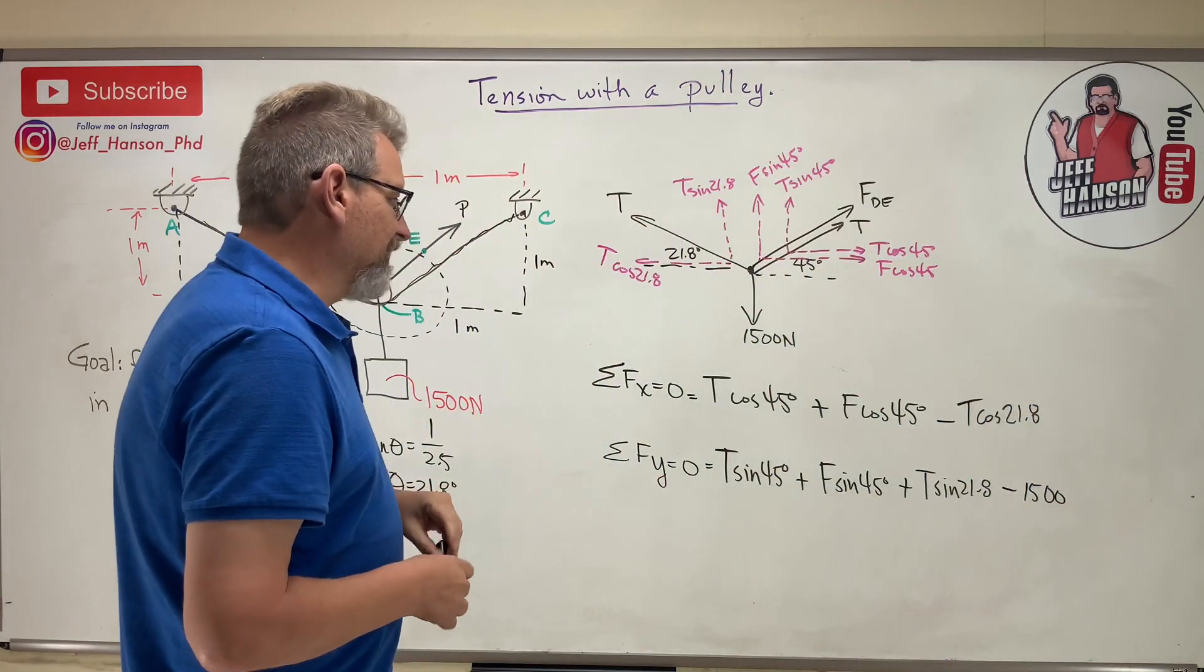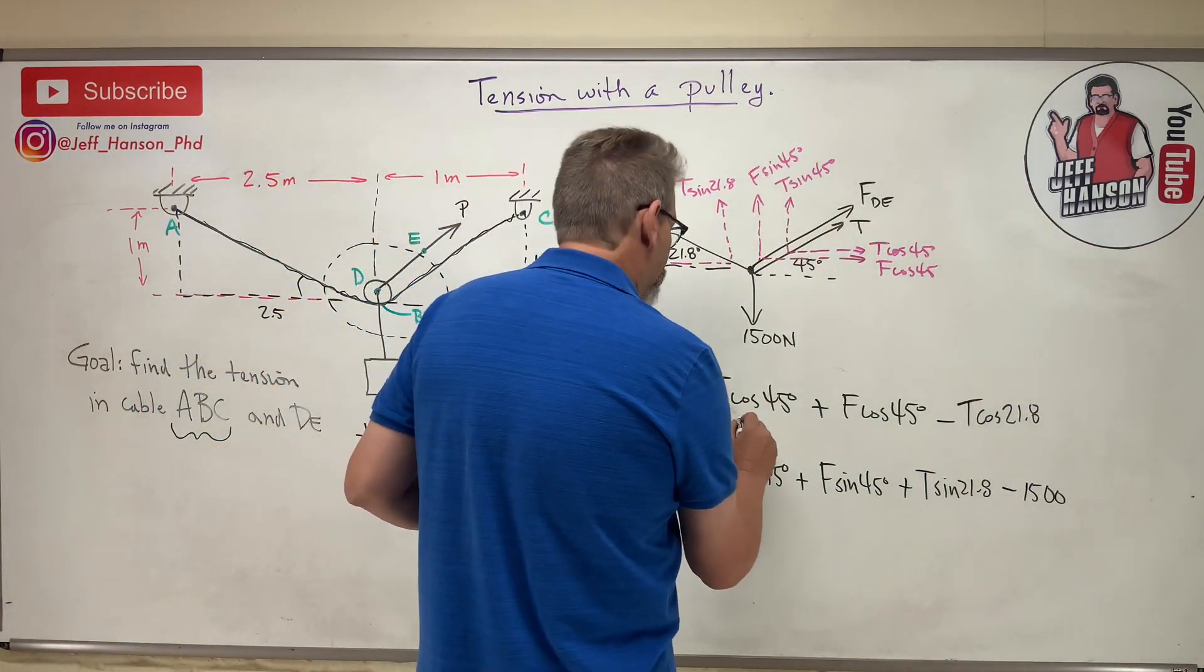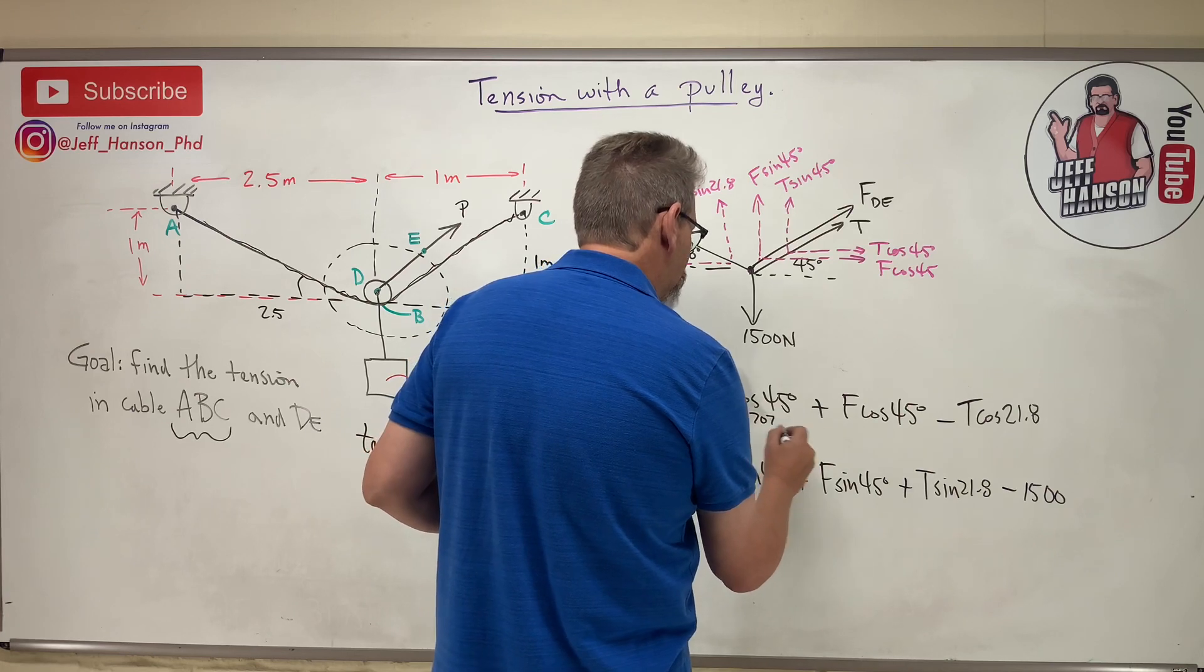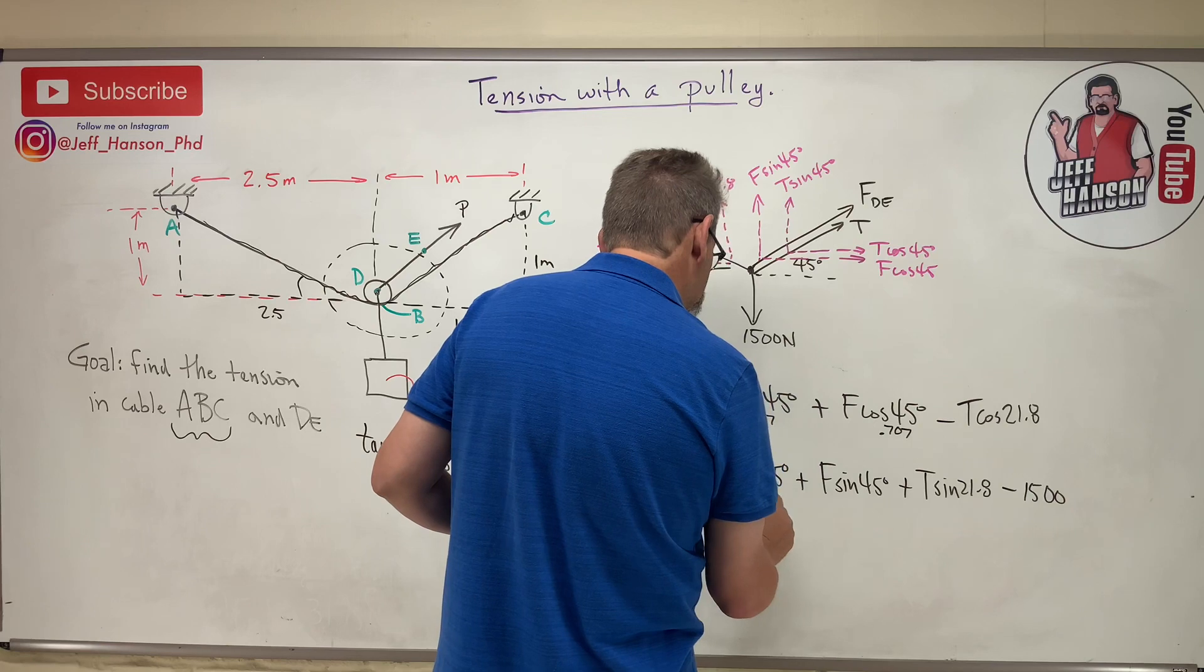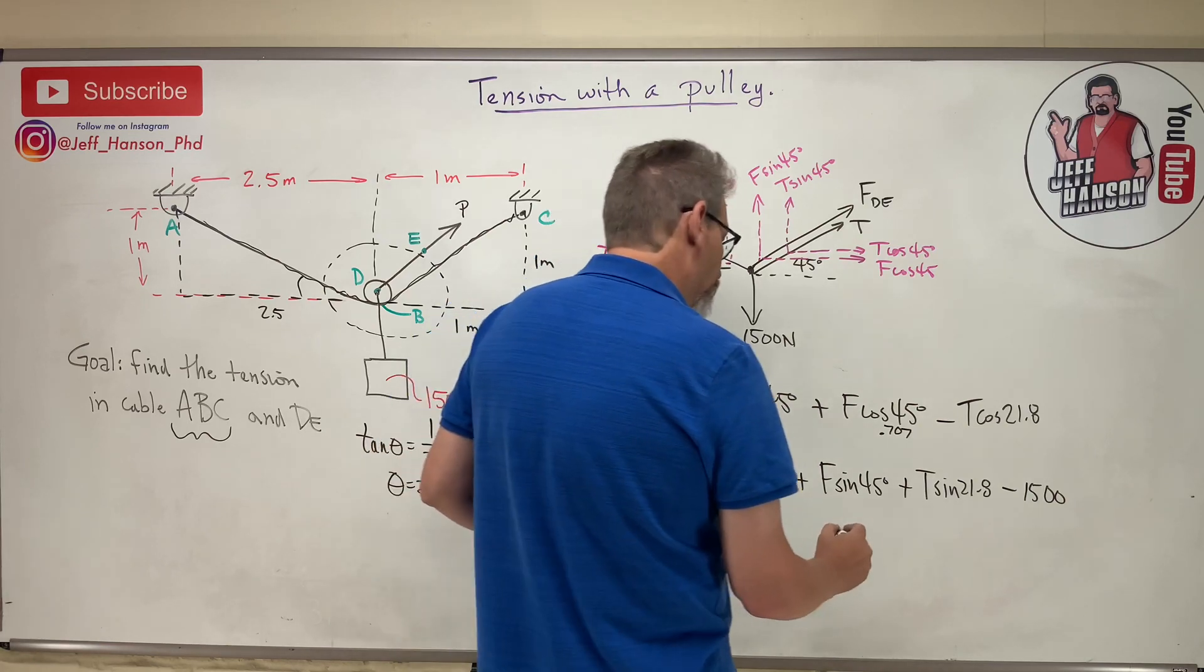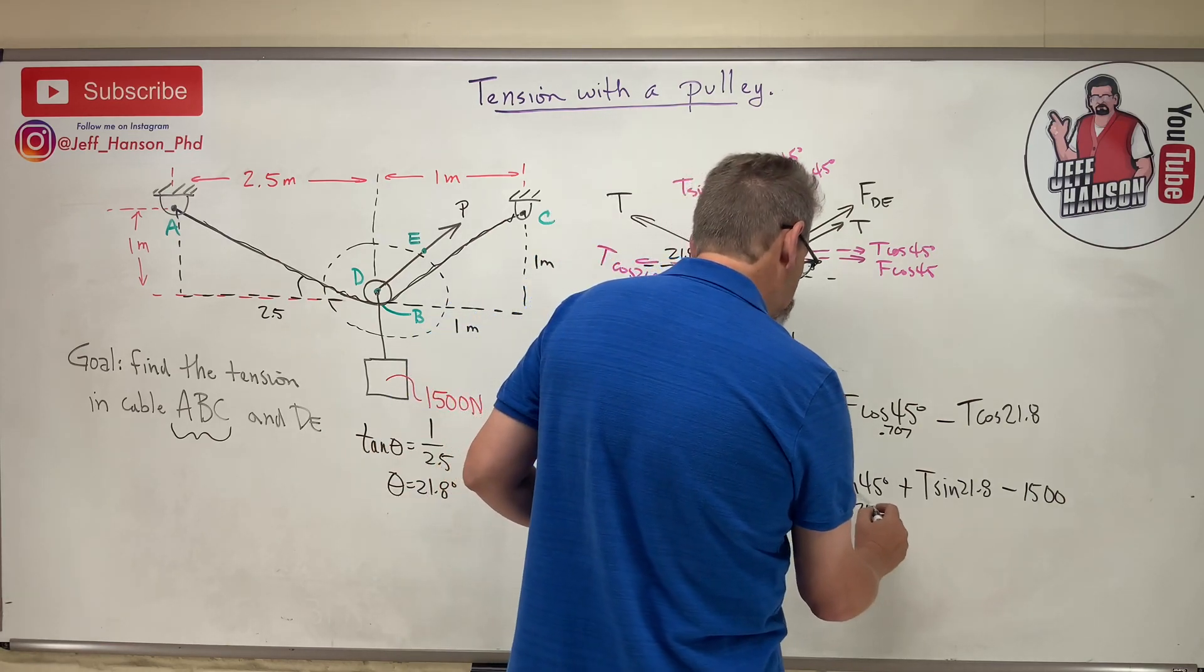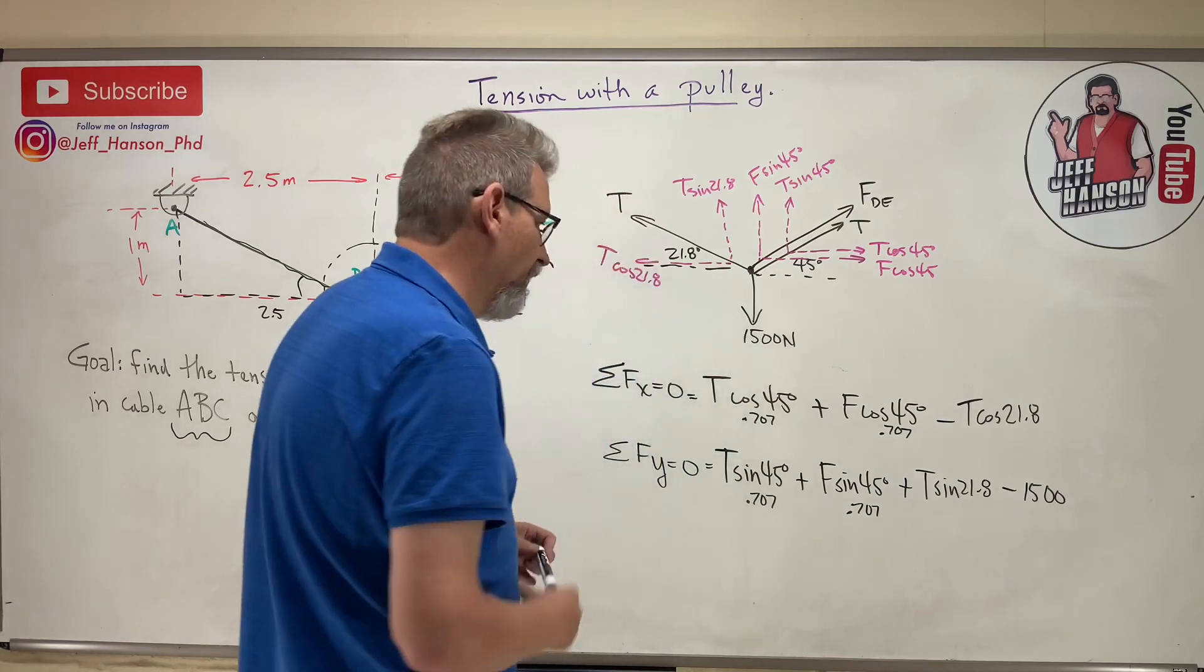I know that the cosine of 45 is 0.707 - that guy's 0.707. I know that this guy's 0.707 and this guy's 0.707. I don't know those other ones off the top of my head, so let's calculate that.